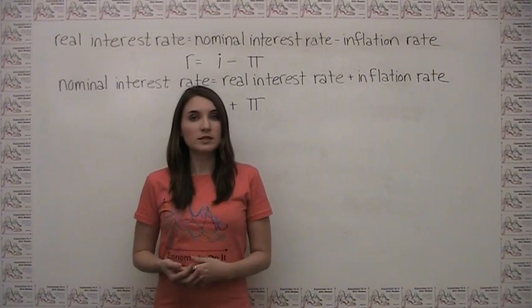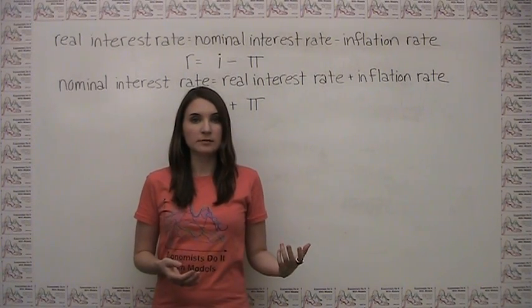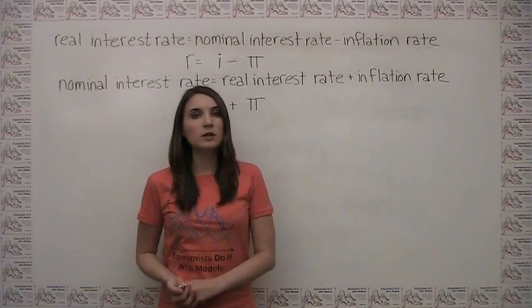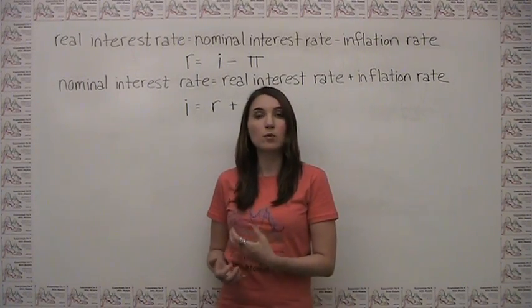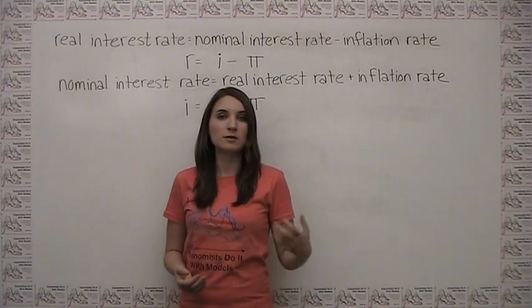On the other hand, real interest rates take purchasing power into account. For example, if the real interest rate is 5% per year, then money in the bank will be able to buy 5% more real stuff next year than if it was withdrawn and spent today.